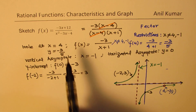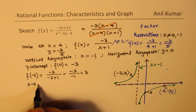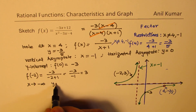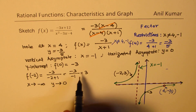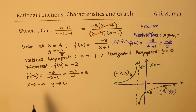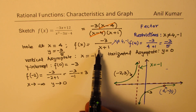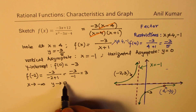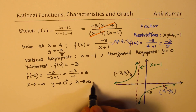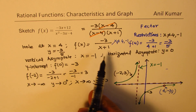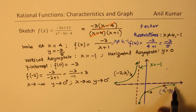Now we can describe the characteristics. Let's begin with the end behavior. When x approaches negative infinity, y approaches 0 — but does it approach from above or below? If we substitute a large negative value, we get a positive value, so y approaches 0 from above. When x approaches positive infinity, y approaches 0 as well, but substituting a large positive value gives a negative value, so it approaches 0 from below.